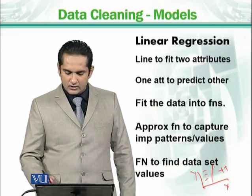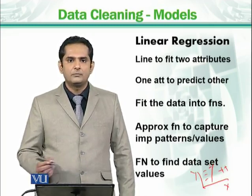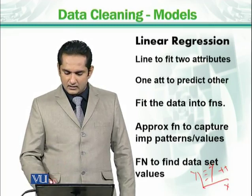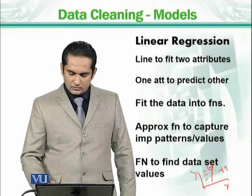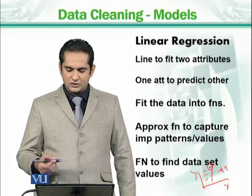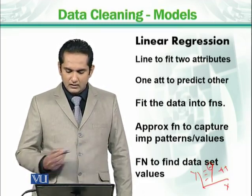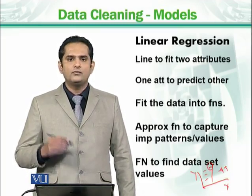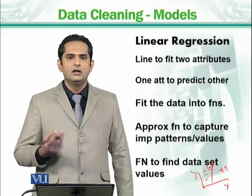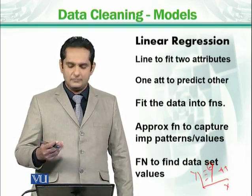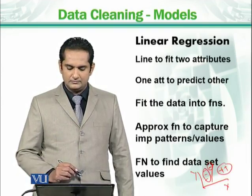If we can predict where a new point will go — will it go to this class or that class? — this is called prediction of one attribute based on the other attributes. If we want to formalize this, we need a function that predicts the values based on these attributes.